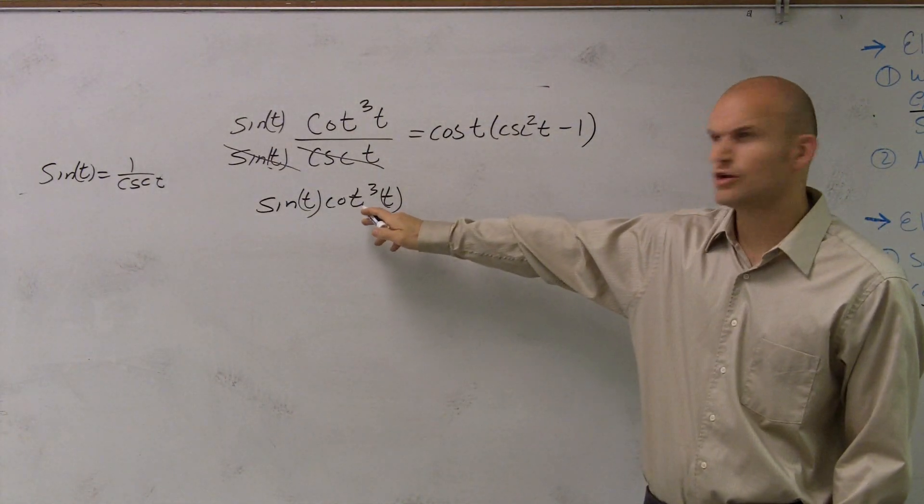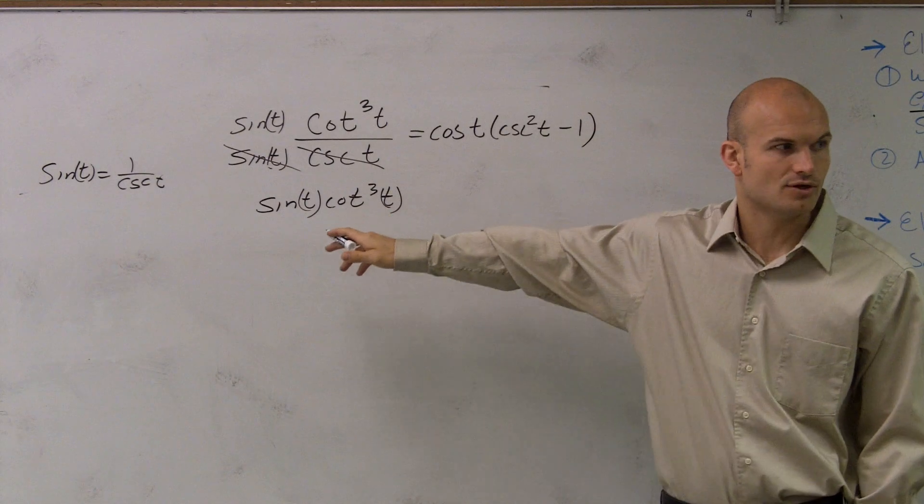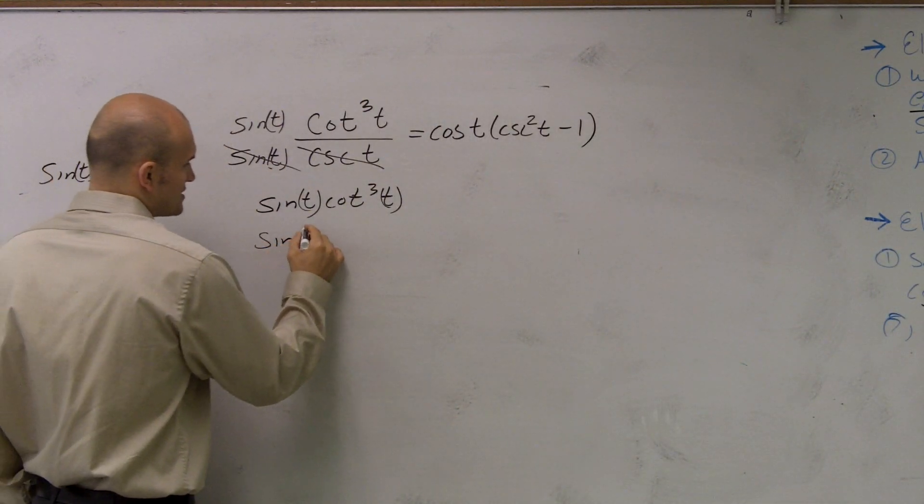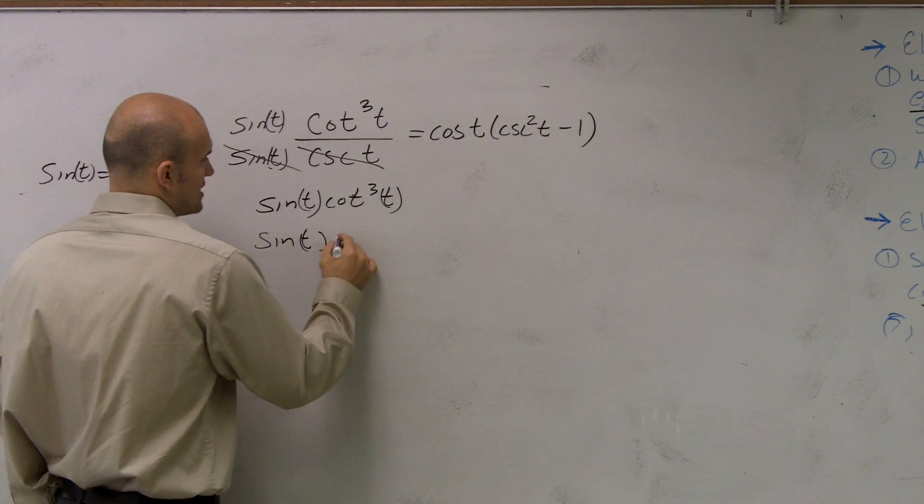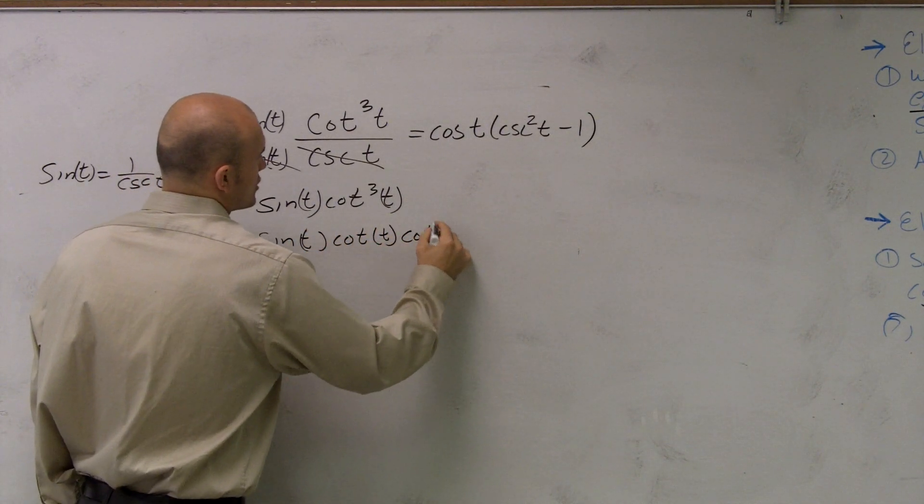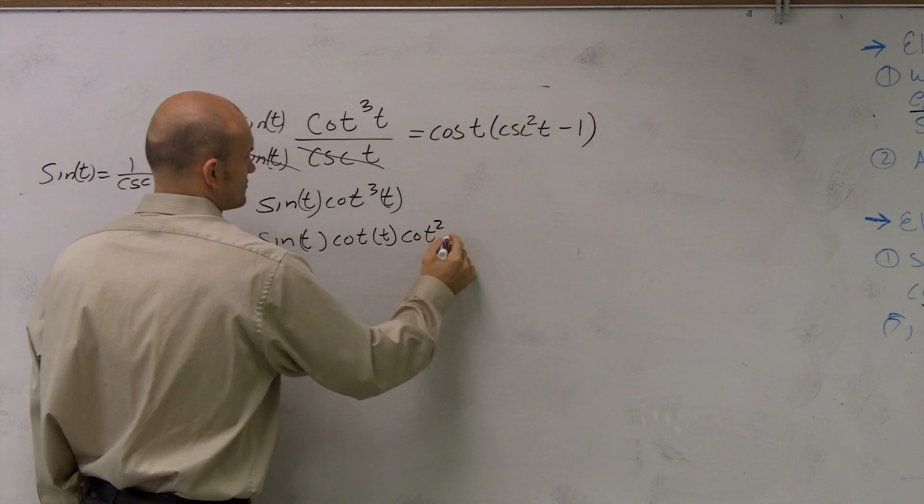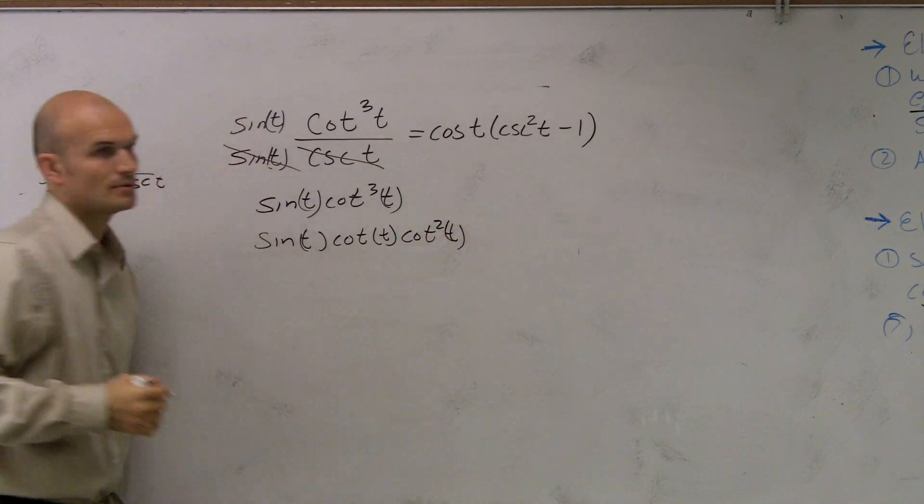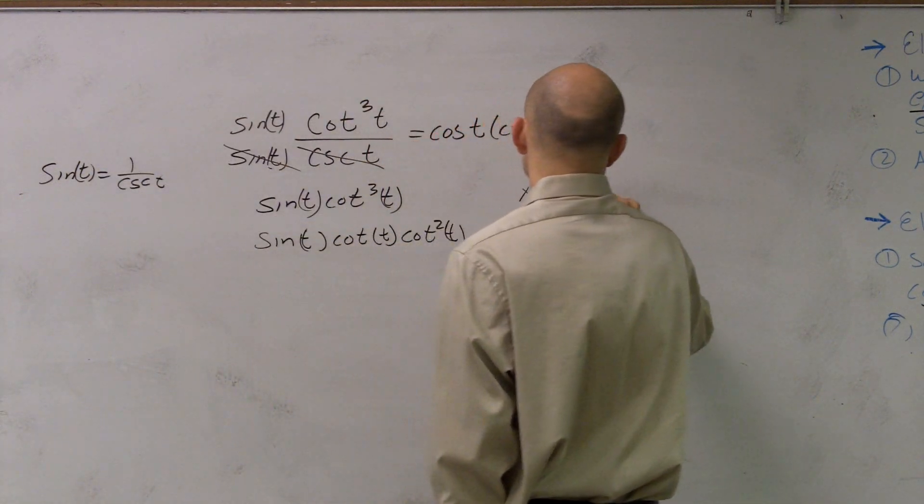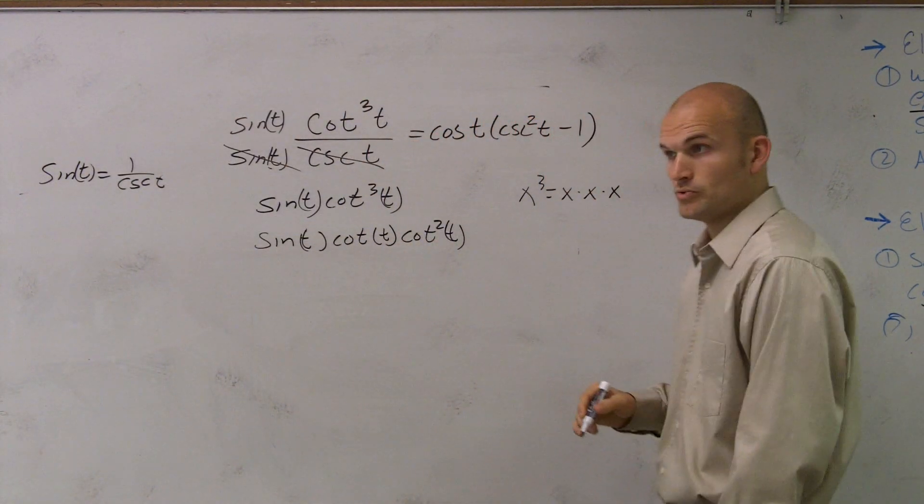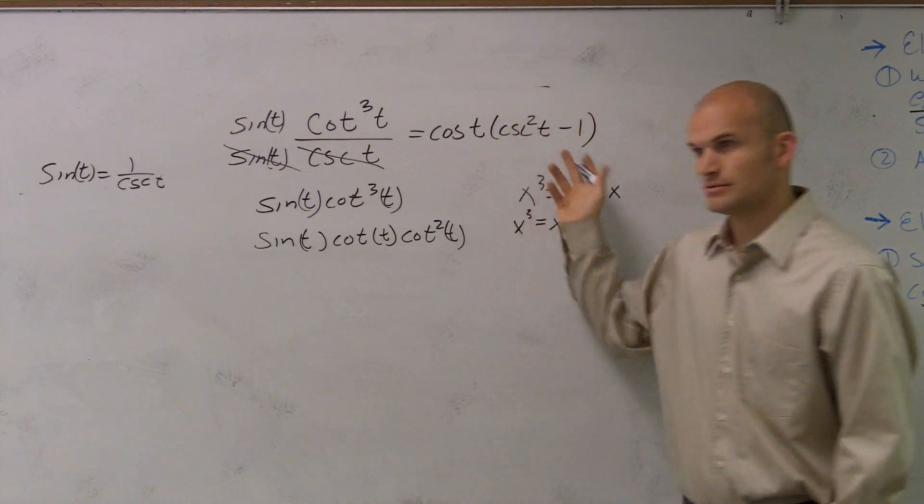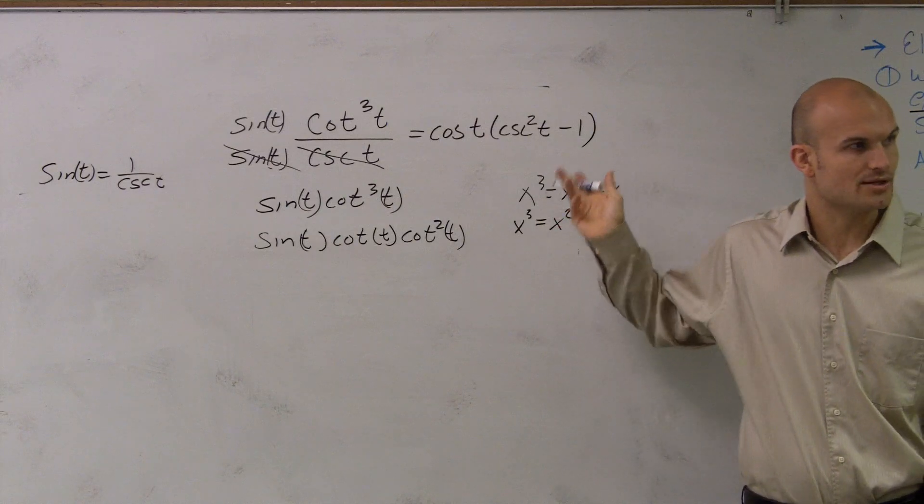So what about, remember, what is cotangent cubed equal? Well, that equals cotangent squared and cotangent. Yeah, you could rewrite that as sine of t times cotangent of t times cotangent squared of t. Right? Because, guys, remember x cubed equals x times x times x, right? Or you could say x cubed equals x squared times x, right? So I'm just following our properties of exponents.